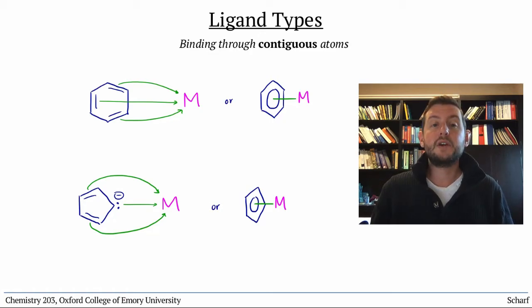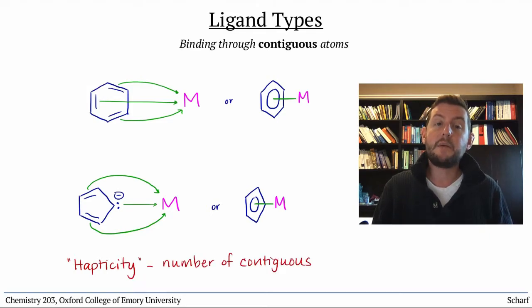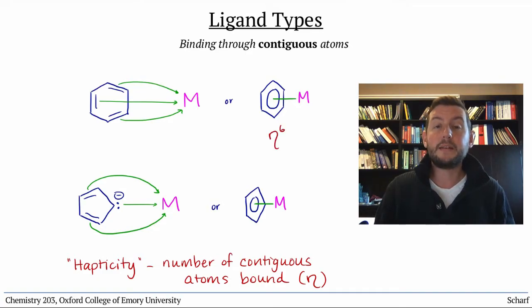These sorts of ligands are said to have hapticity, which is the number of contiguous atoms that a particular conjugated compound can bind to a metal through. We use the Greek letter eta to denote hapticity. Benzene can bind in an eta VI fashion, and the cyclopentadienyl anion usually binds eta V.